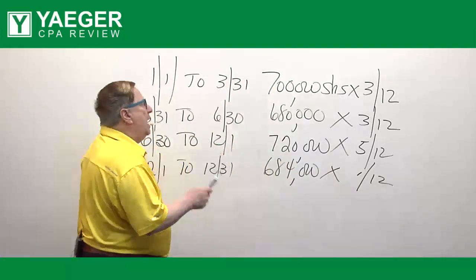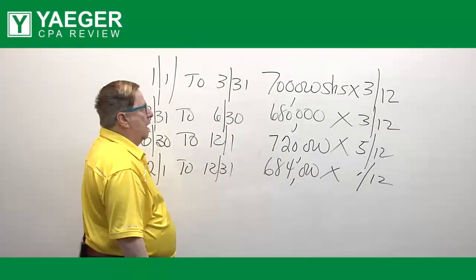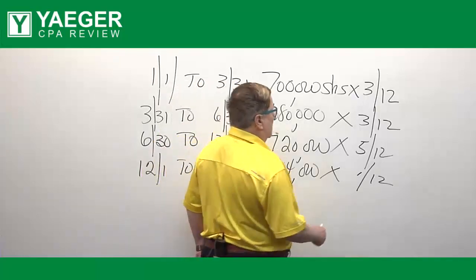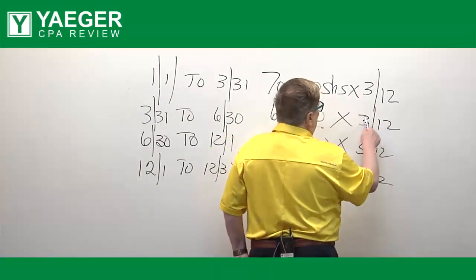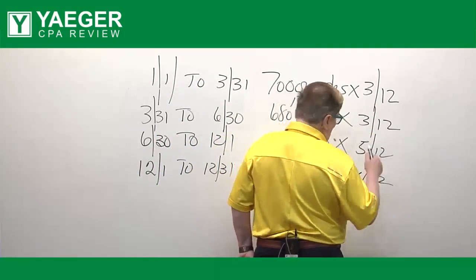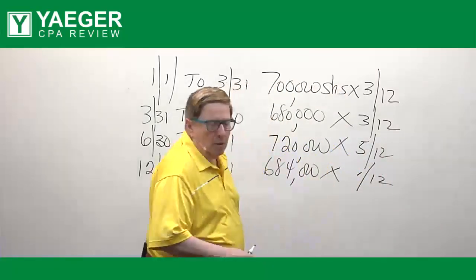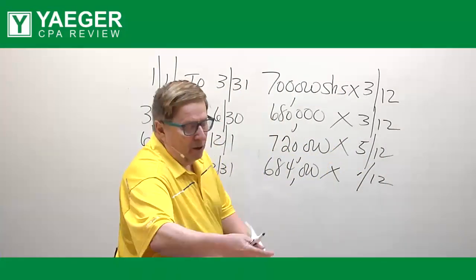Now this should add up, all the fractions should add up to 12 over 12 months. So we have 3, 6, 11, 12. So we have 12/12. Now we're going to multiply these by each of these numbers.